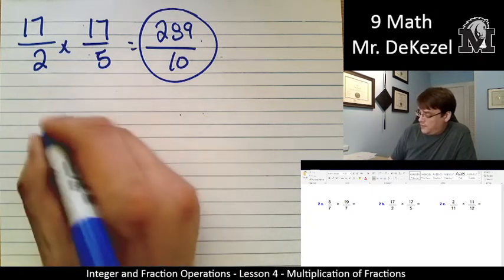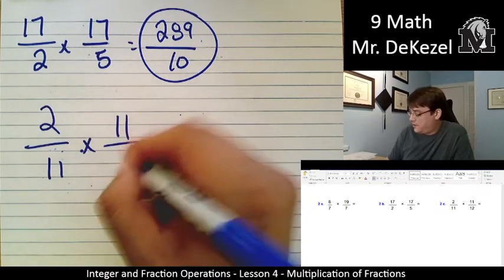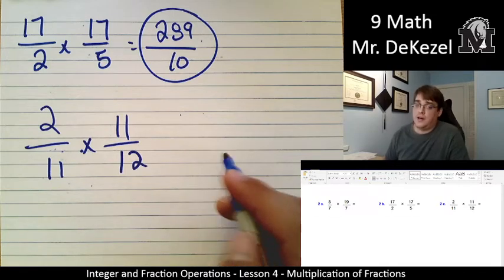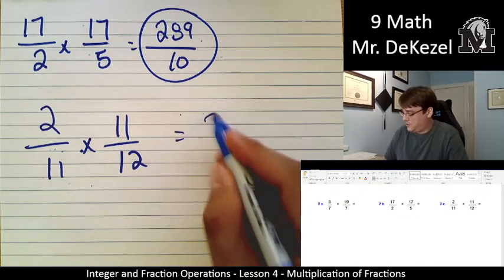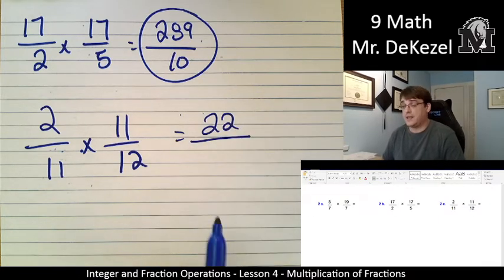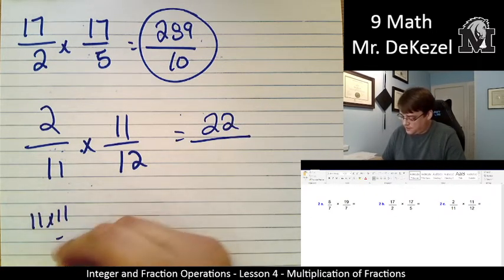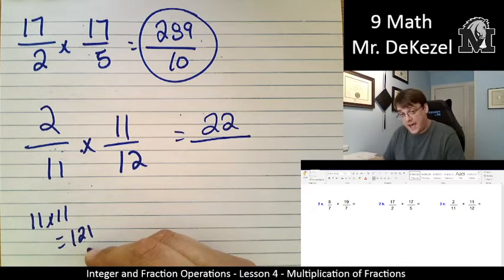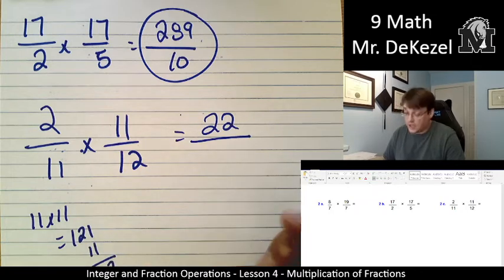And we have one more. 2 over 11 multiplied by 11 over 12. 2 times 11 is 22, and then 11 times 12. So I know that 11 times 11 is 121, so if I add 11 once more, I get 132.